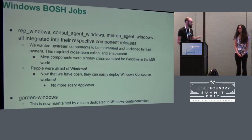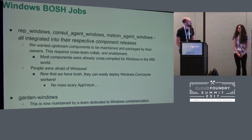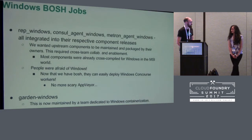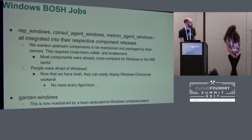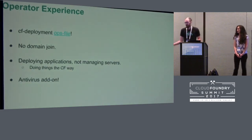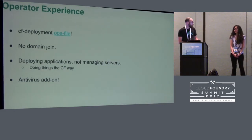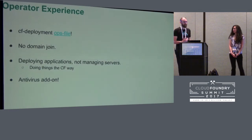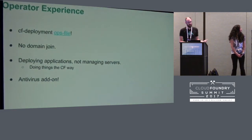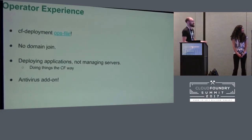We also had BOSH now, and everyone's afraid of Windows, but no more excuses. We can say, here's a Concourse worker release — you like Concourse, so just run that. That's been an awesome point for our team in collaborating with everyone else on Windows. The only thing maintained by a Windows-specific team now, besides the BOSH agent itself, is GardenWindows — and that component is only responsible for containerization. The operator experience now is there's a CFDeployment ops file: if you want a Windows cell, you just opt into that behavior and upload the Windows stemcell. There's still no domain join — we're still figuring out our story there, but we'll have more on that soon. You can finally focus on deploying applications as an operator and enabling that within your organization instead of managing servers, which is the whole CF story. There's even an antivirus add-on — one of our customers really wanted antivirus for their Node.js app, so they stood up Windows servers with an antivirus add-on to run Node.js. It works.